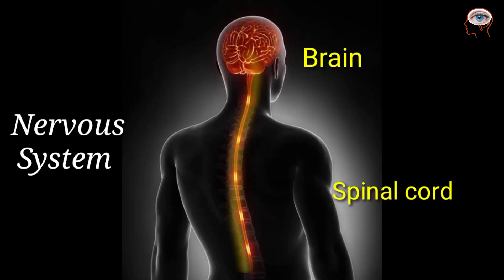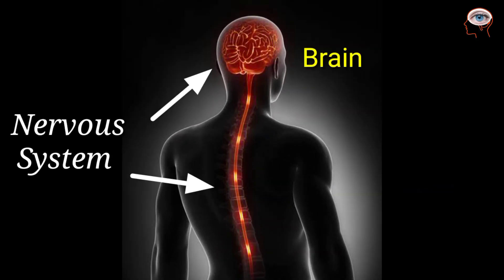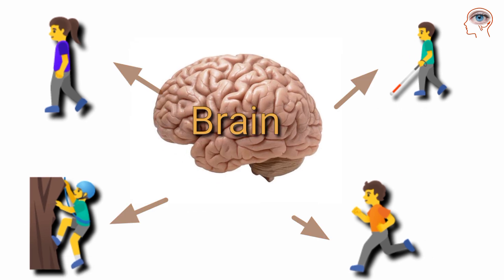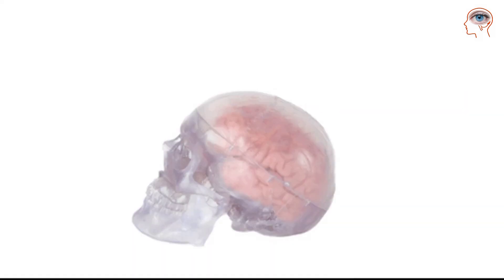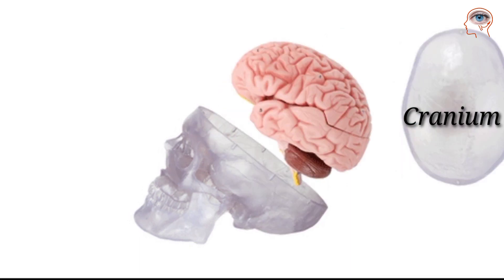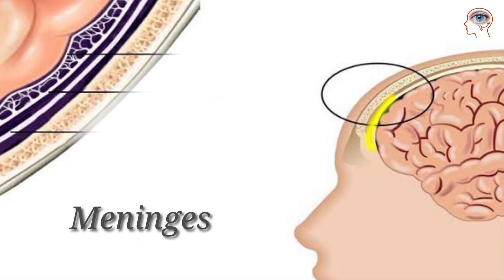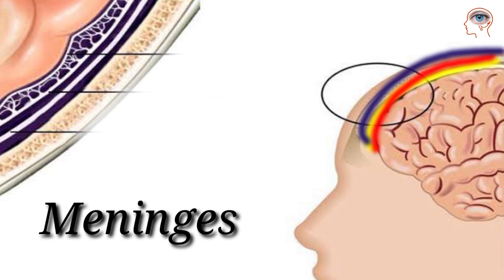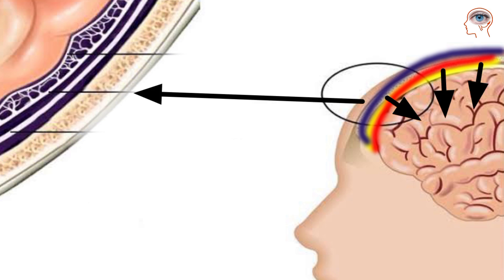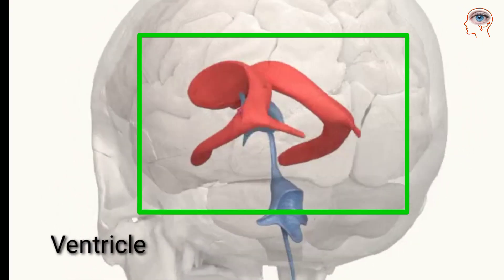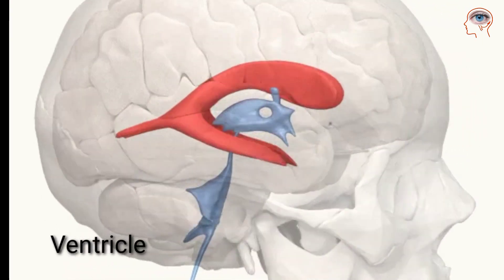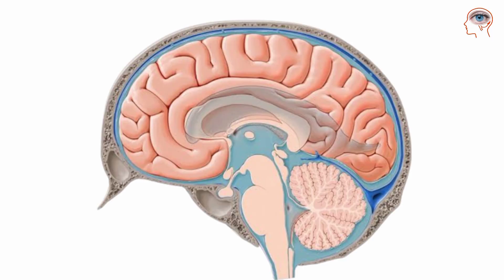The nervous system consists of the brain and spinal cord. All life activities are under the control of the brain, and its structure is suitable to perform this function. The brain is situated inside a bony cranium and is also covered by three layers called meninges, which protect and provide nutrients and oxygen to the brain tissues. The brain contains fluid-filled ventricles that are continuous with the spinal cord.